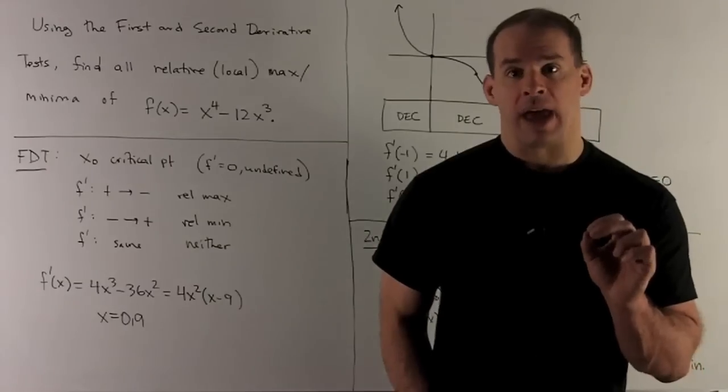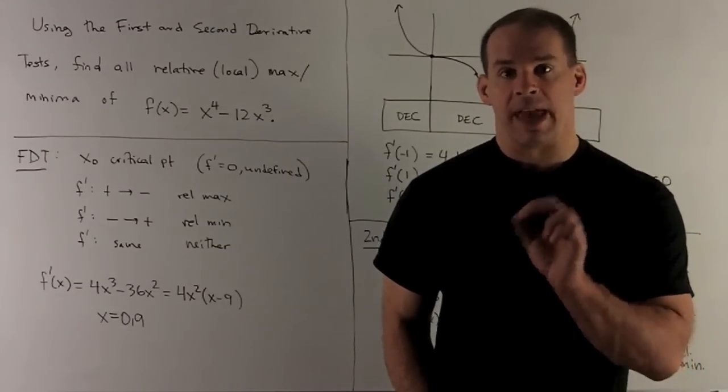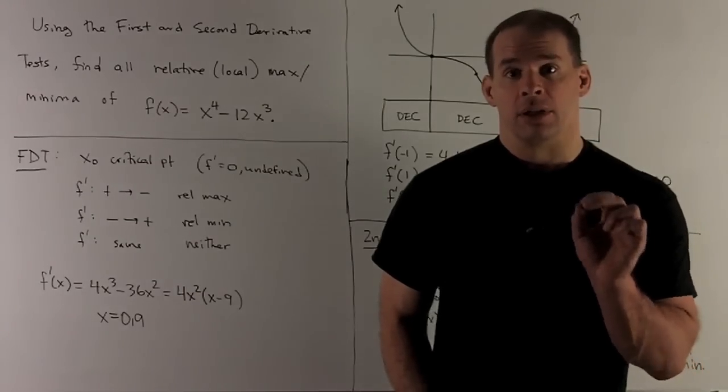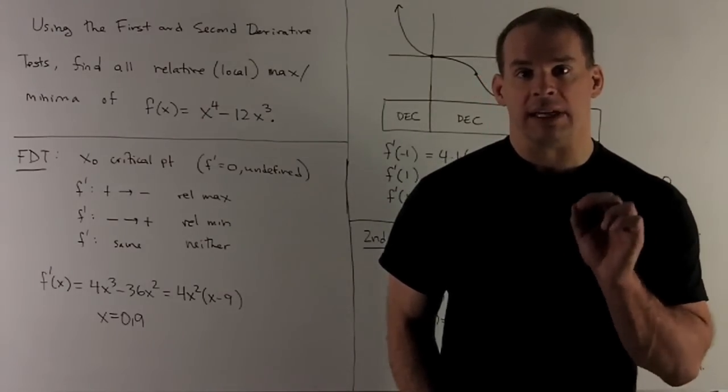If it goes from negative to positive, we'll have a relative minimum. And if the first derivative sign stays the same on each side, we'll have neither.